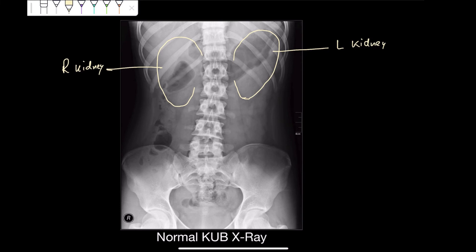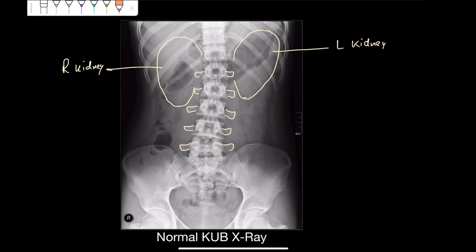Previously I was talking about the transverse processes of these vertebrae, especially the tips of the transverse processes — they are important for us. Now I will show you why we need to know about them and how they help in identifying something. The most posterior structure present in the hilum of the kidney is the renal pelvis, and we all know this renal pelvis becomes the ureter. This ureter has a long journey — I am making the left ureter for you — and it follows the tips of these transverse processes on both sides.